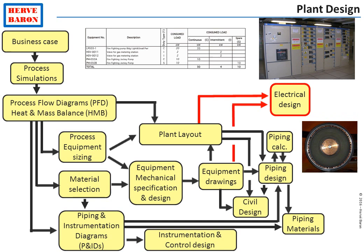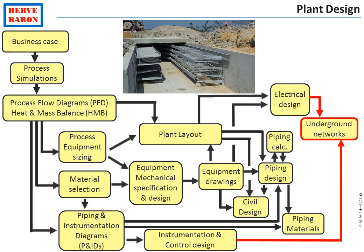The electrical design starts with the inventory of all the plant power consumers. This allows to size the power generation. The plant layout is used to define the architecture of the electrical distribution and the number of substations, among other things. Power cables are sized and their routes are defined, and since these cables are installed underground, such information is provided to the civil engineer, who performs the underground networks layout drawings.